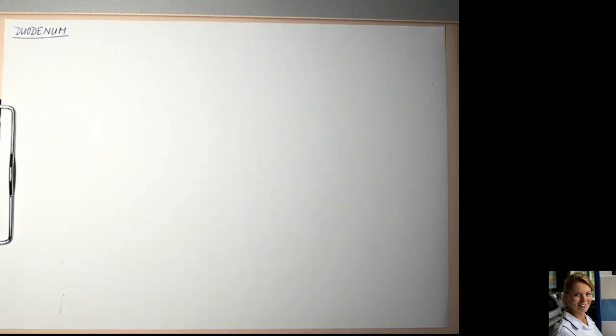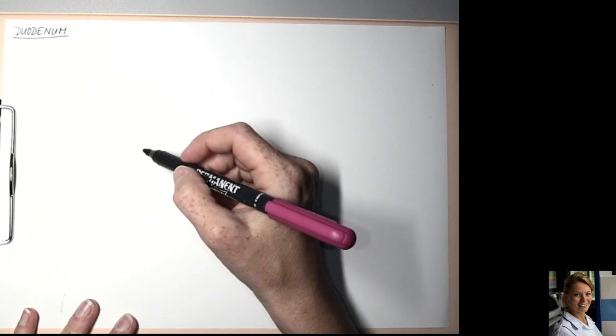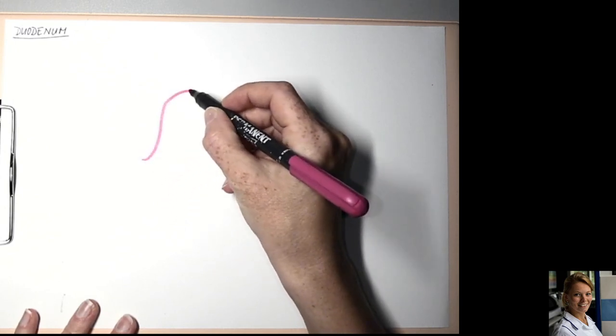For absorption of nutrition, a large surface is necessary. There are many structures which increase the absorption surface of duodenum. Firstly, there are folds which are formed by mucosa and submucosa.